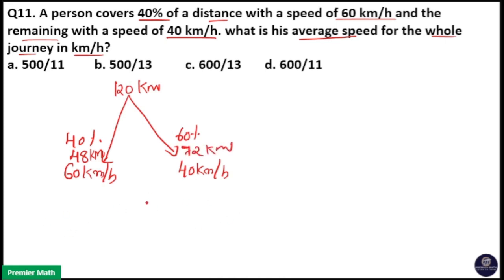So here if I take average speed, average speed is equal to total distance, 120 km, divided by total time. Here 48 by 60 plus 72 by 40 is the total time.